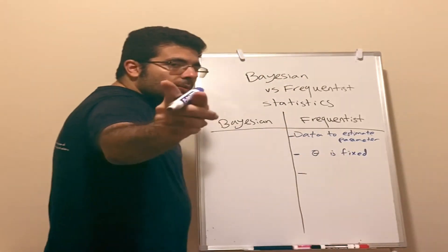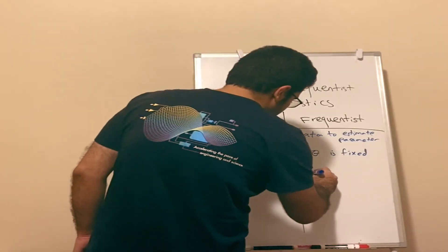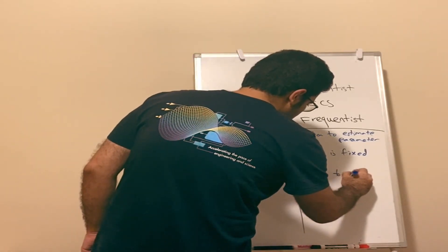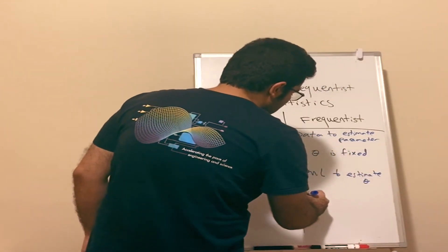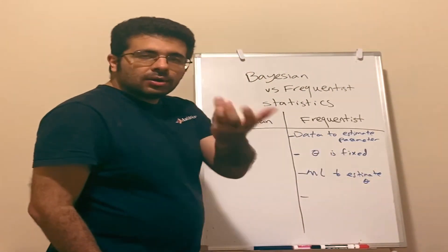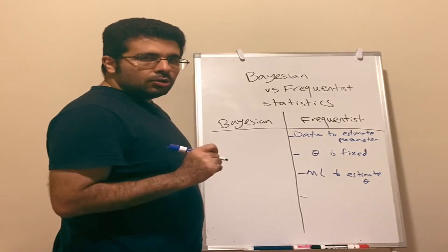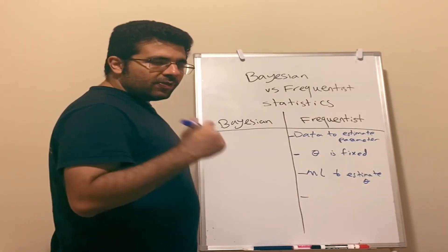They use maximum likelihood to estimate theta, and they use the notion of confidence interval to quantify uncertainty.